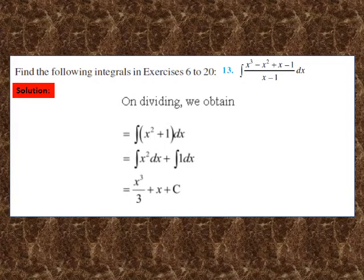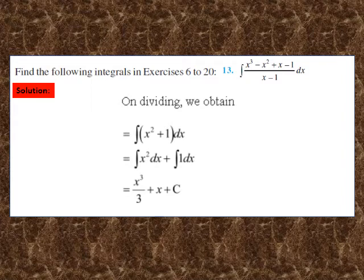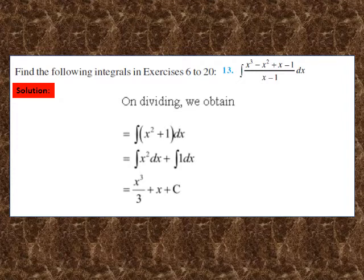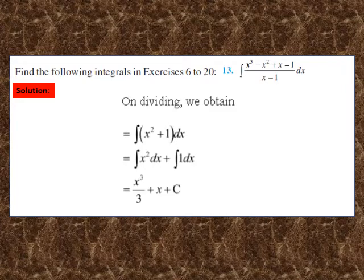Question 13: find the integral of (x³ - x² + x - 1)/(x - 1) dx. Dividing numerator by denominator gives x² + 1. So the integral equals ∫(x² + 1) dx, which is ∫x² dx + ∫1 dx. Applying the formula, integral of x² is x³/3, plus x, plus constant of integration c. Pause and note down the solution.